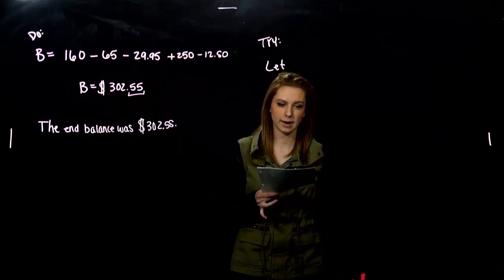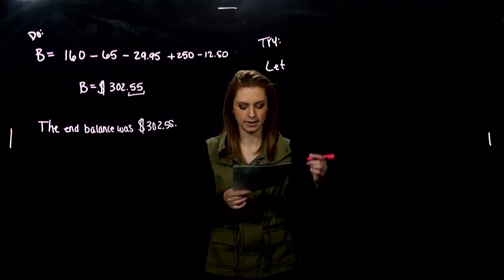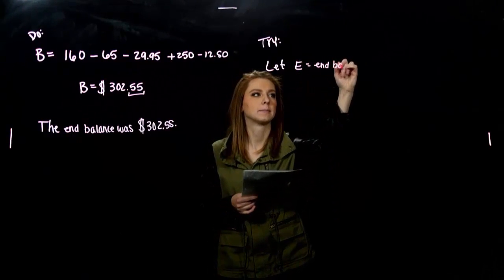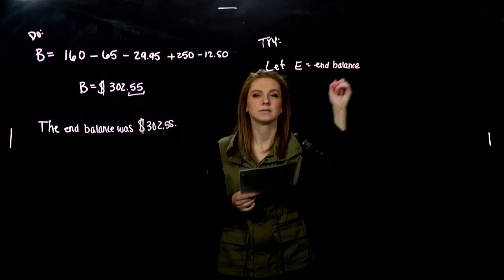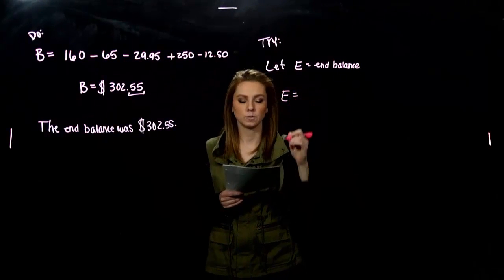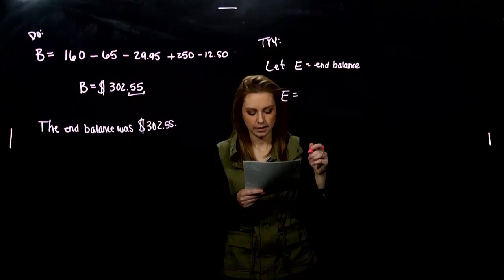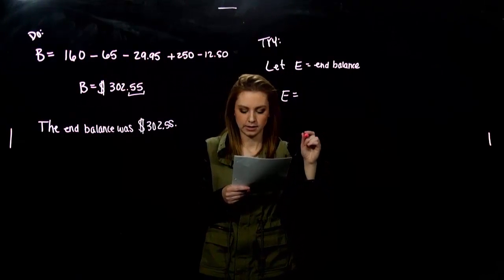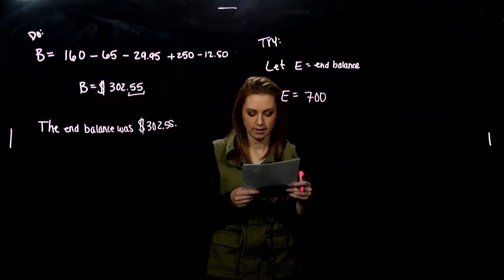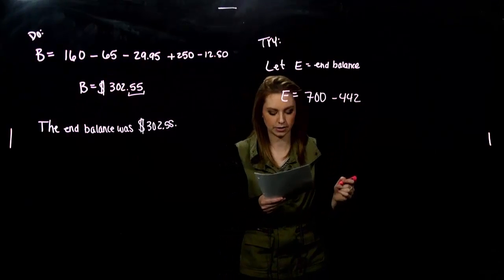So whenever we're working with application problems, we need to assign a variable to what we're trying to figure out. So I'm going to let E be the ending balance in this case, since I used B before. So what's that looking like? What was your setup? Initially we had $700 in the checking account. So that was positive. That's what we started with. And you had to pay the tuition bill of $442. That's a good chunk out of your $700.